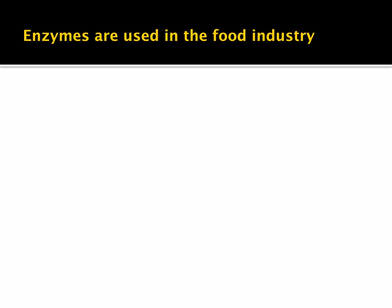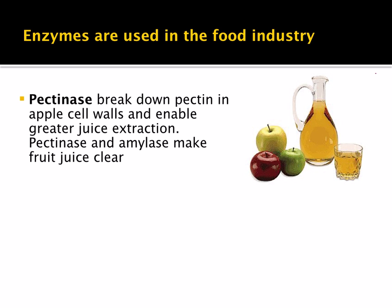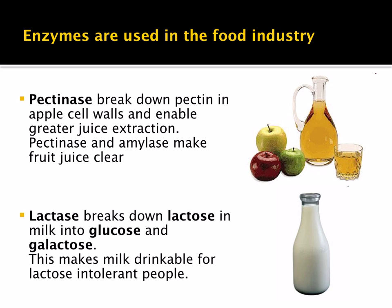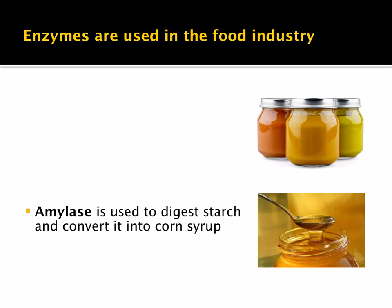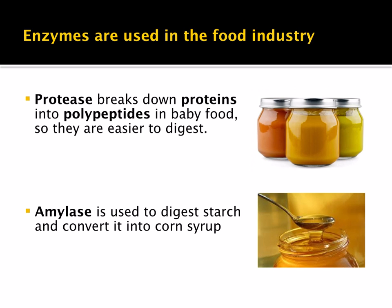Moving on to enzymes in the food industry. Pectinase breaks down pectin in apple cell walls, enabling greater juice extraction. Mixing pectinase and amylase makes fruit juice clear. Lactase breaks down lactose in milk into glucose and galactose, making milk drinkable for lactose-intolerant people. Amylase is used to digest starch and convert it into corn syrup. Protease breaks down proteins into polypeptides in baby food, making it easier for babies to digest.